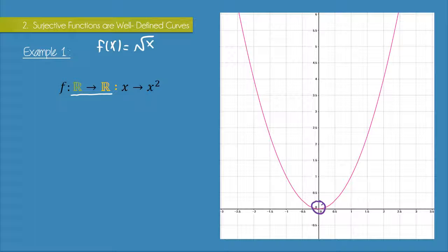If we want to make this function surjective, we need to redefine the function by restricting the codomain. We need to make the codomain equivalent to the range of possible outputs, or y values. As we said, the minimum y value, or output, is zero.